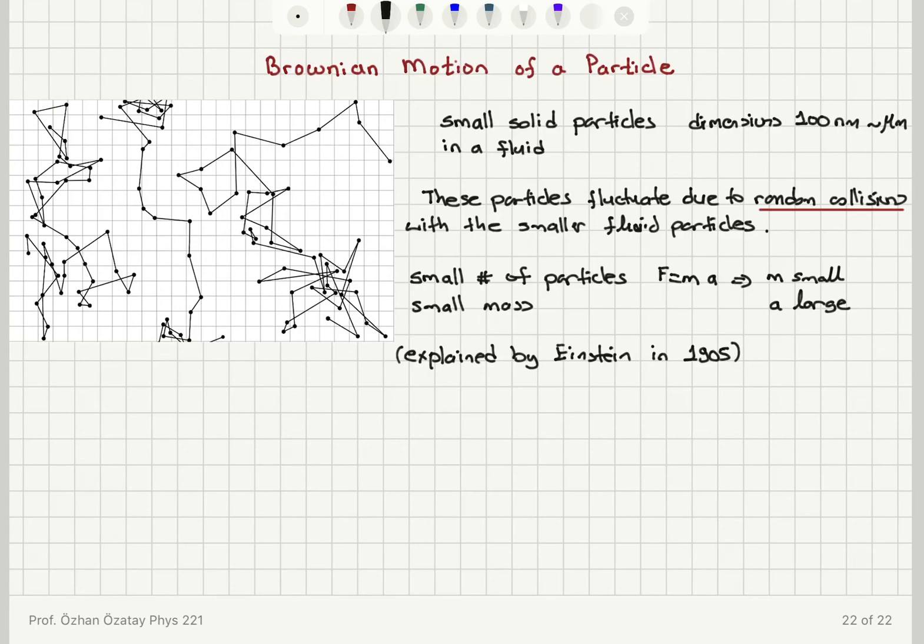These can be detected easily if the system is small or with sensitive methods. So in this case, the system is small and it doesn't take too much effort to observe the Brownian motion.